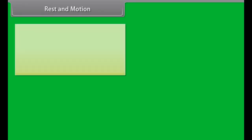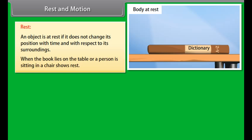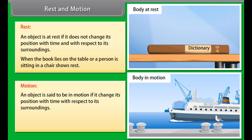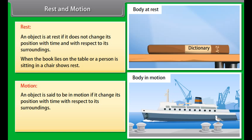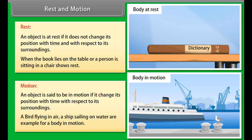Rest and Motion: An object is said to be at rest if it does not change its position with time with respect to its surroundings. When a book lies on a table or a person sits in a chair, it shows rest. An object is said to be in motion if it changes its position with time with respect to its surroundings. A bird flying in air and a ship sailing on water are examples of a body in motion.